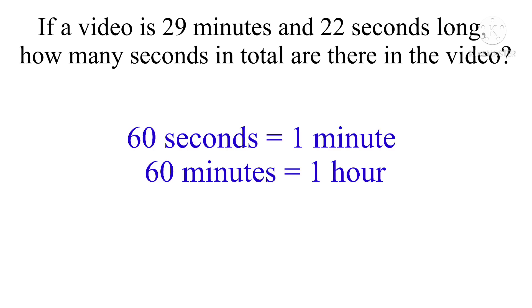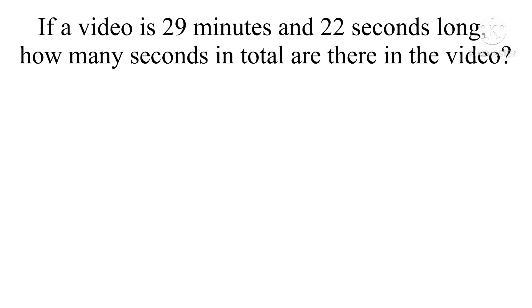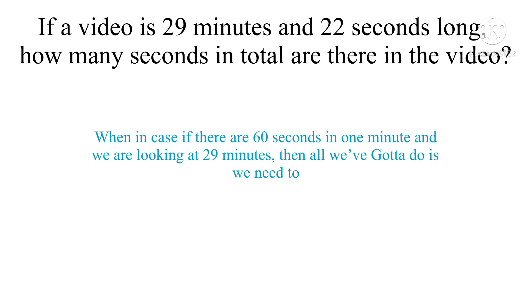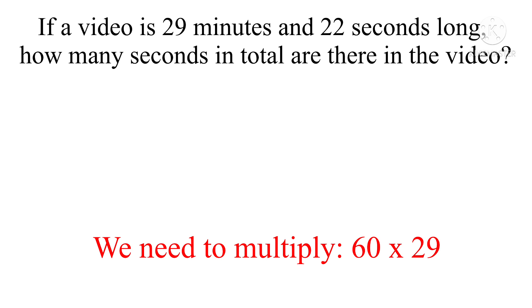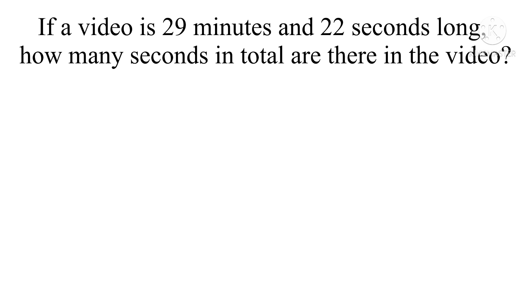We need to know that 60 seconds is equal to one minute, and 60 minutes is equal to one hour. So one minute means 60 seconds long. How much will 29 minutes be? If there are 60 seconds in one minute and we are looking at 29 minutes, then all we've got to do is multiply 60 by 29. Let's keep it as 6 times 29.